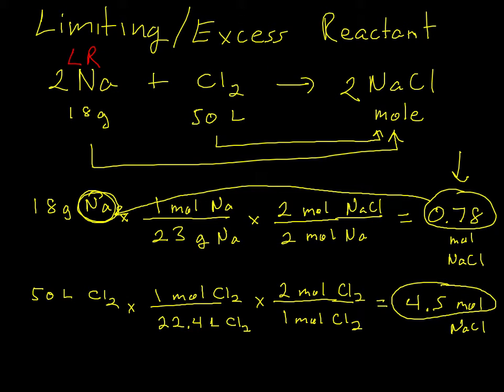If sodium is the limiting reactant then that makes chlorine the excess reactant. By doing those two stoichiometry problems you've answered those two questions - what is the limiting reactant and what is the excess reactant. The key thing is when you get these answers after you convert both to moles, find the smallest one. The source of the smallest one is the limiting reactant. Where did this 0.78 come from? That came from the 18 grams of sodium. So sodium is the limiting reactant and whatever else is present in the equation is going to be excess. That's pretty easy I think.